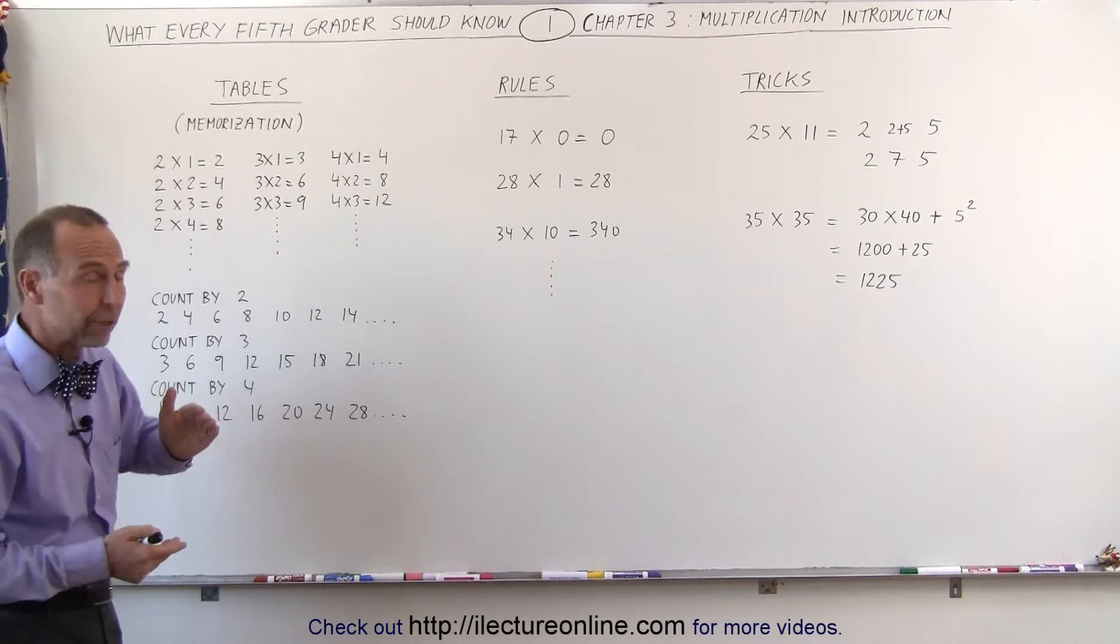The first one, and it's indispensable, is simply memorization. We should really try to memorize the multiplication tables from 1 to 10. In other words, we need to know what 2 times 1 is, 2 times 2, 2 times 3, 2 times 4, and so forth.